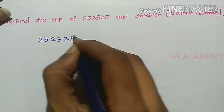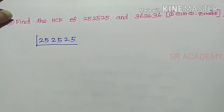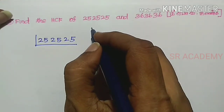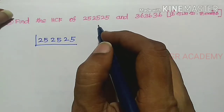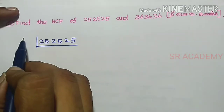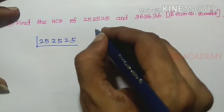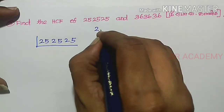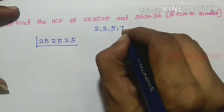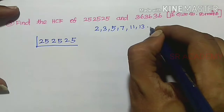So, 252525 — the first number. We will find its prime factorization. The prime numbers are 2, 3, 5, 7, 11, 13, and so on.